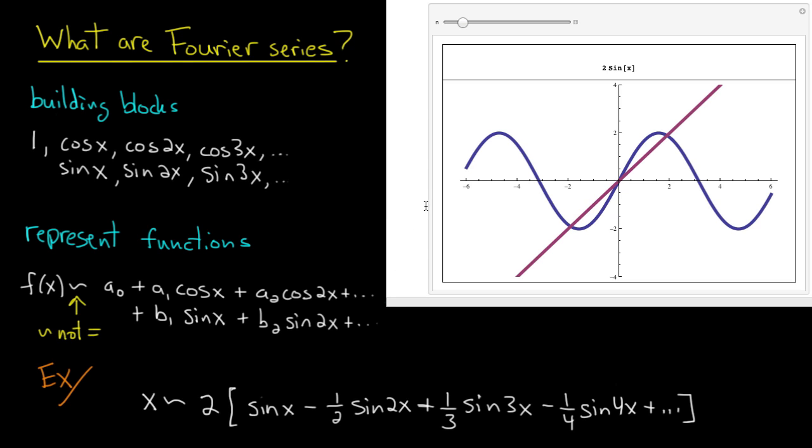So I have a graphical illustration of this idea of building up the function x out of the building blocks, which are sine functions. So we're looking at the function x here in light purple, and the first term, 2 times sine x, the first term right here in blue of the Fourier series representation.